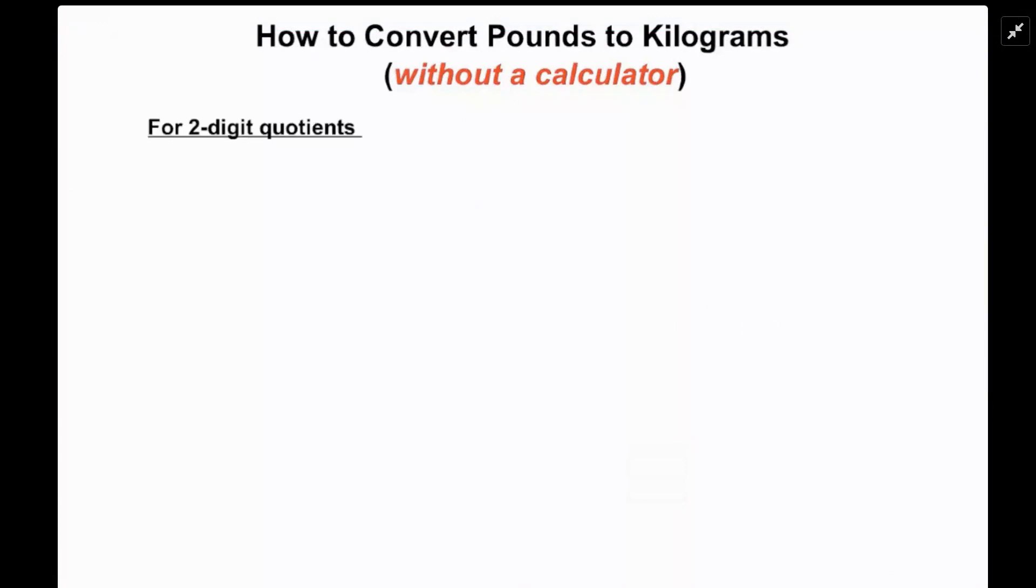When you're dealing with two-digit quotients, you take that number divided by two, then subtract the first digit of the quotient from the quotient. Let's do an example. If we wanted to convert 50 pounds to kilograms without a calculator...